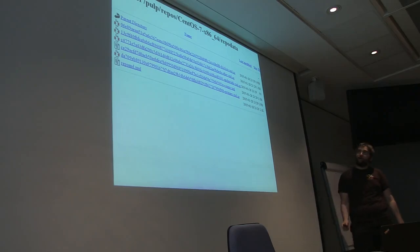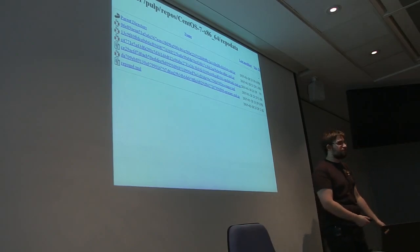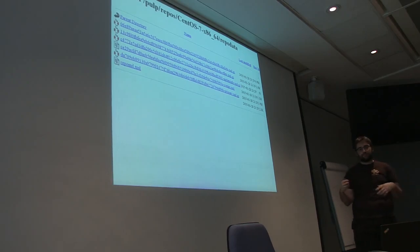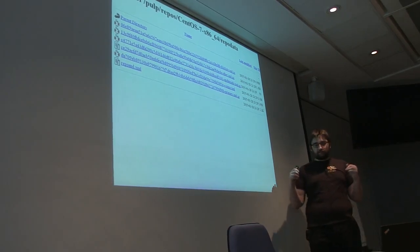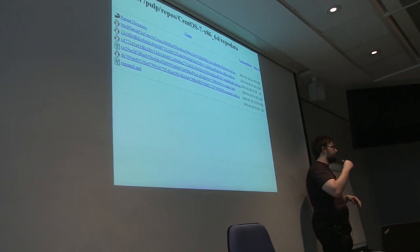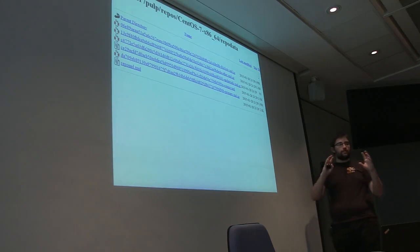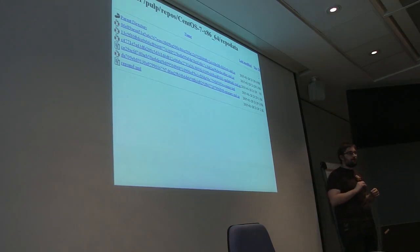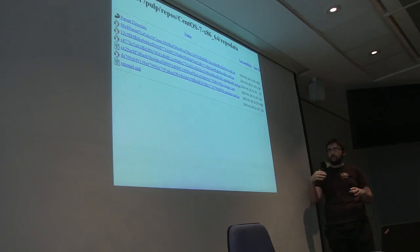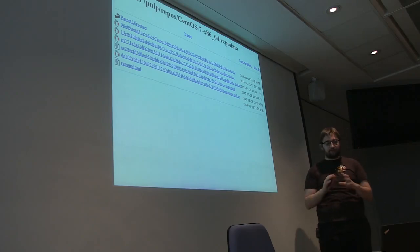Now we can browse the Pulp repositories and see the CentOS 7 repository is there with lots of RPMs, and also the repo data. It really is a yum repository. But you might say you could do this with reposync, rsync, or mrepo. That's true — for the moment nothing is really new. But each RPM has been read by Pulp and you can now search that database: search by checksum, by name, find build dates, and get a lot of information from the content.